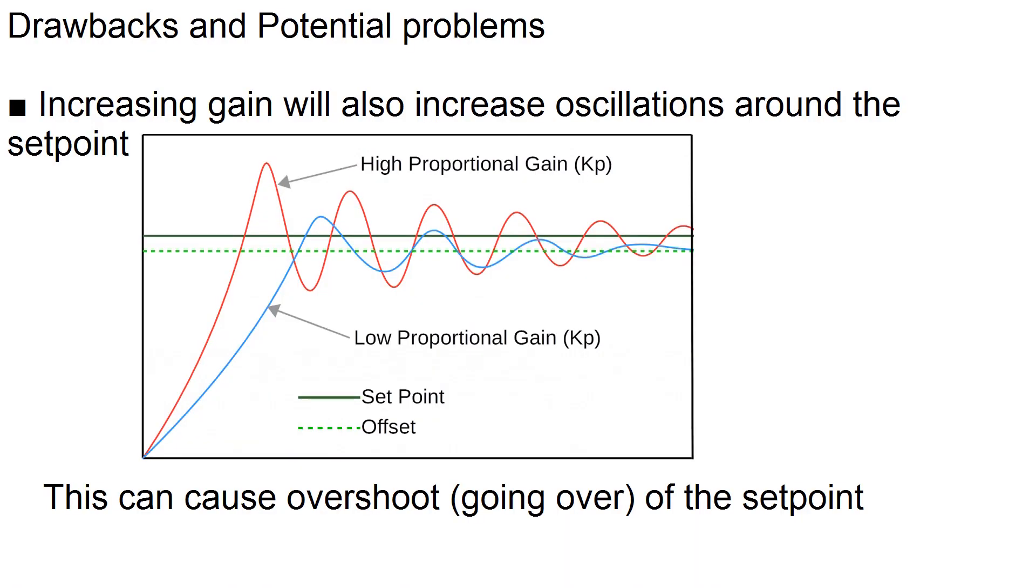Now, the other thing is, increasing the proportional gain, as you saw, caused it to react faster, but it could also cause it to overshoot the target temperature and then start oscillating, that is, go above and then below and keep repeating that pattern over and over again. If the proportional gain is too low, it may actually never get to the set point, or it'll just come up really slowly.